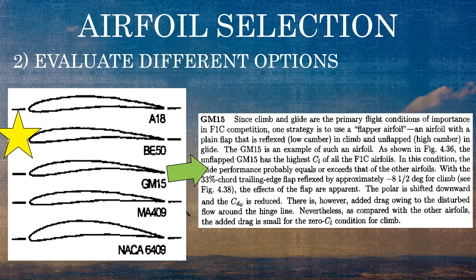The GM15 is an interesting one — it's a flapper airfoil, basically designed to be a little bit compliant, where it deflects into a lower camber in climb and unflapped into higher camber in glide. I'm not sure how well that's going to translate into the medium we're using to 3D print our glider, and looking at some of the plots I'm not really liking the GM15. So I'm going to stick with the BE50 for now.